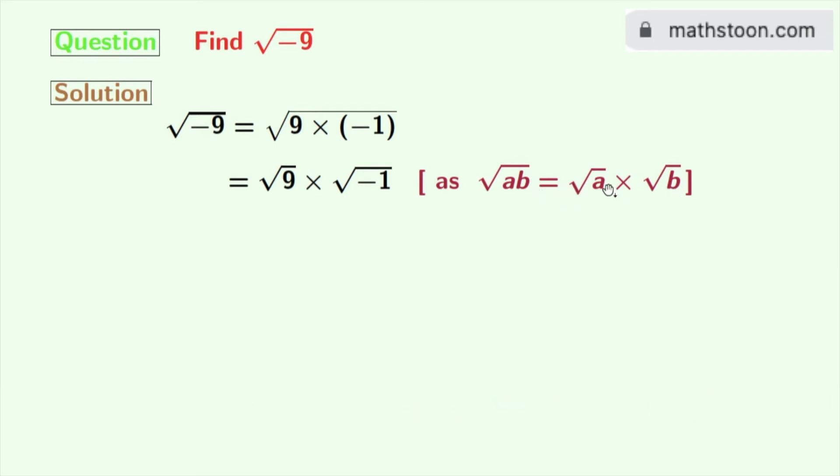Here a is 9 and b is minus 1. Now we all know that square root of 9 is plus minus 3.